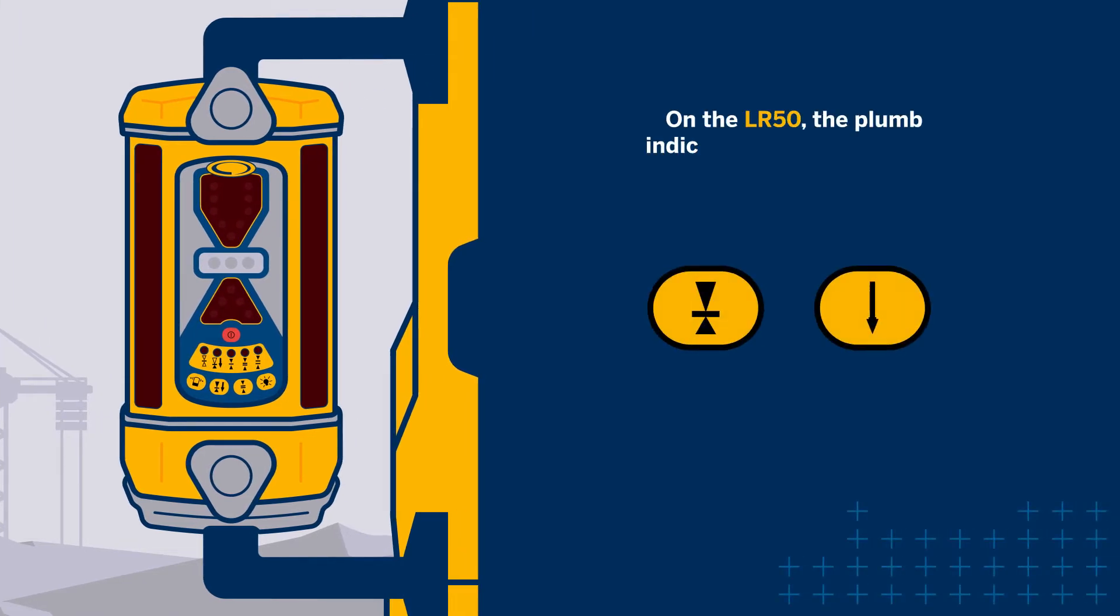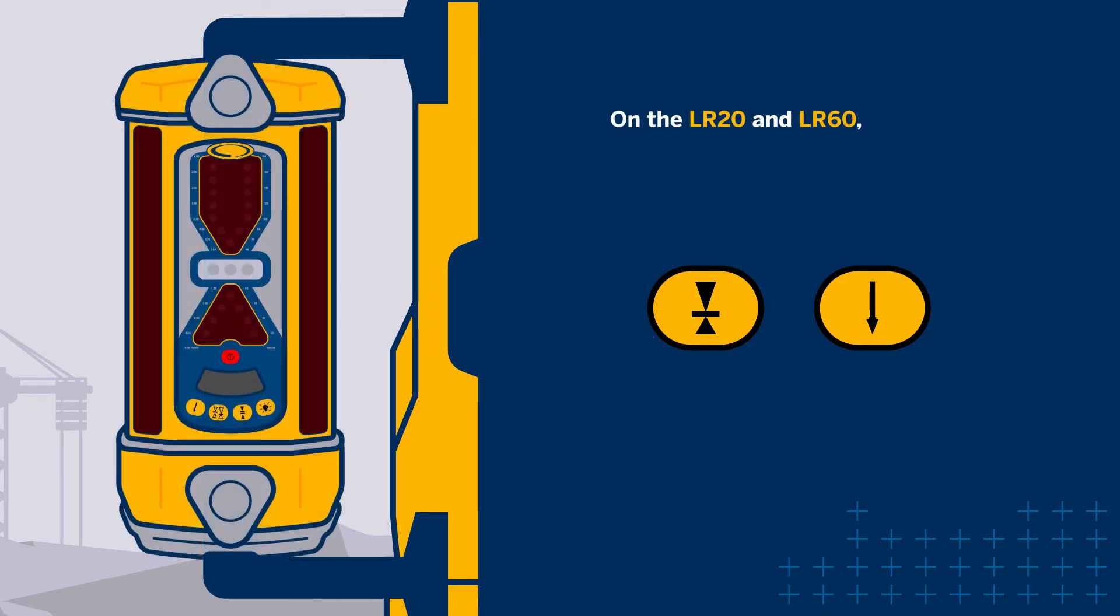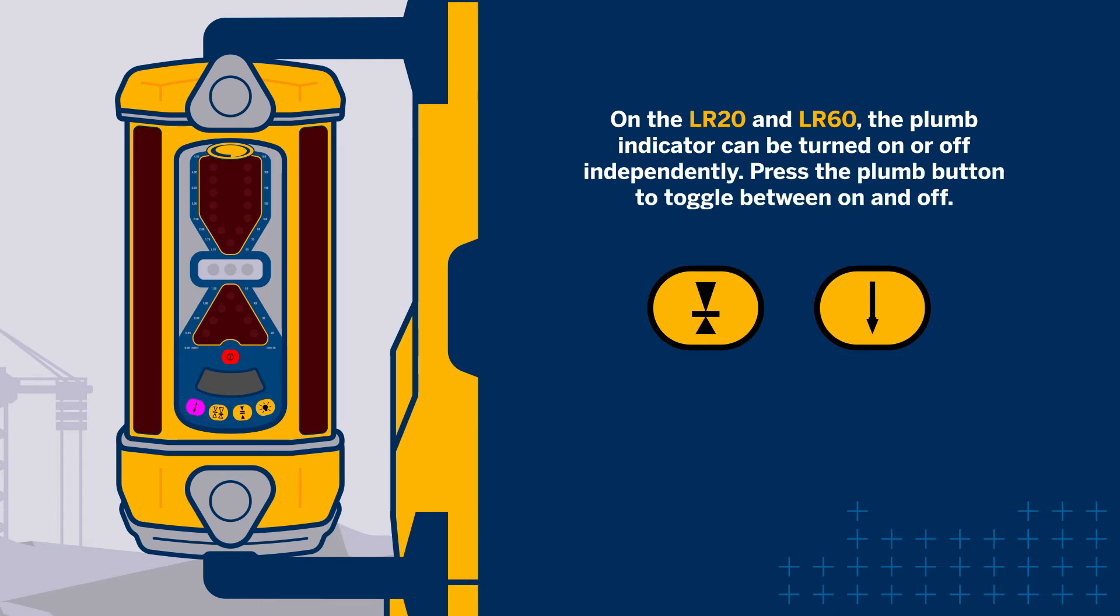On the LR50, the plumb indicator is turned on when the offset mode is selected. On the LR20 and LR60, the plumb indication can be turned on or off independently. Press the plumb button to toggle between on and off.